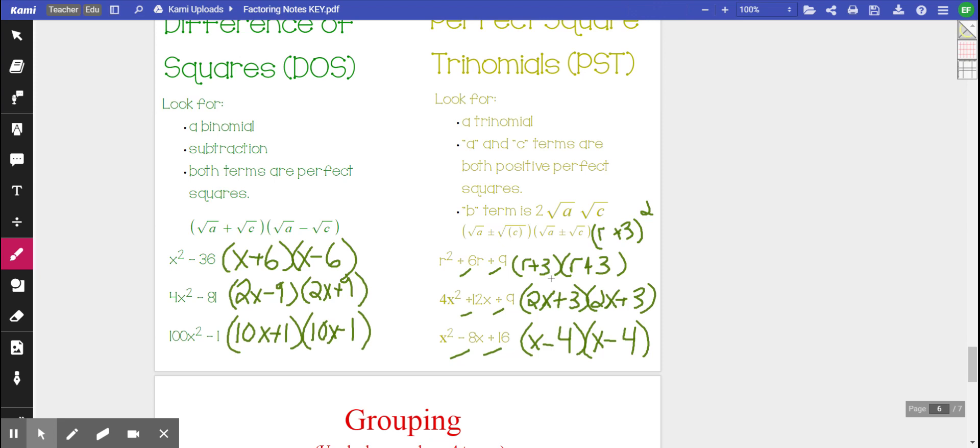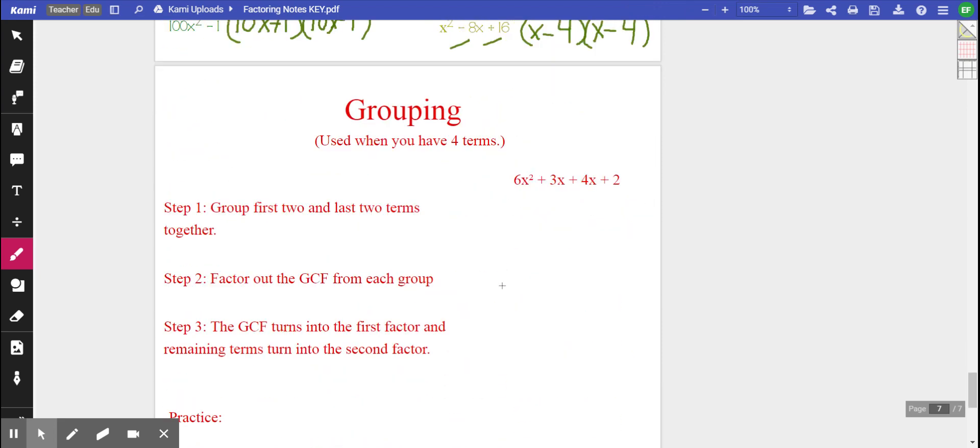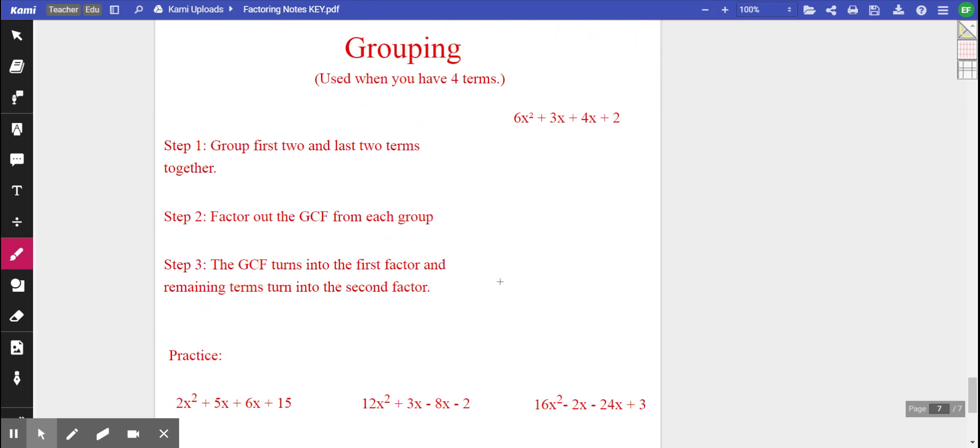Our last technique that we are going to go over is factoring by grouping. This is used when you have four terms. So we're going to group our first two terms together and our last two terms together. We're going to factor out the GCF from each group. The GCF in the first group is 3x. When we do, we're left with a 2x plus 1. When we factor the GCF out of the second set, GCF is 2. So again, that's going to leave us with the 2x plus 1.